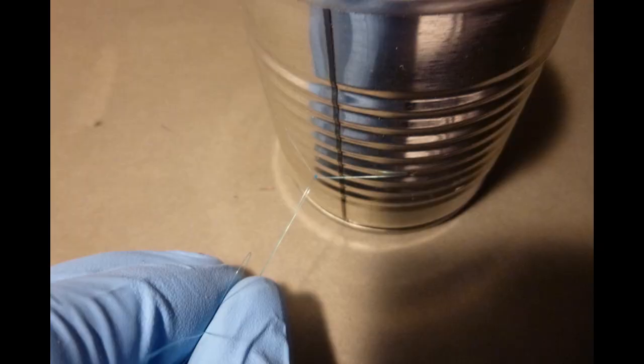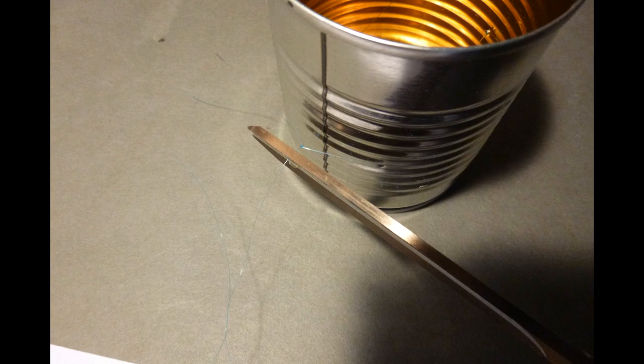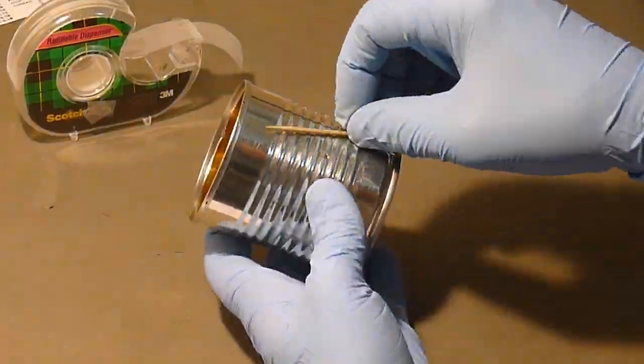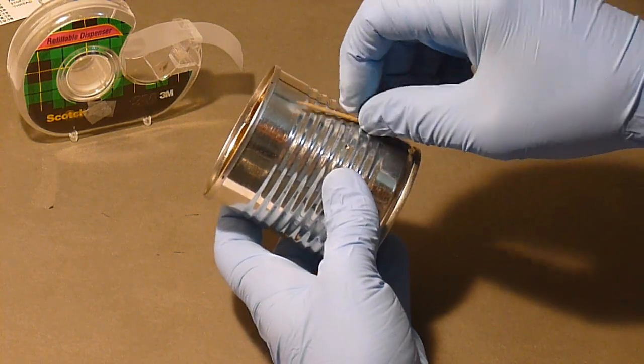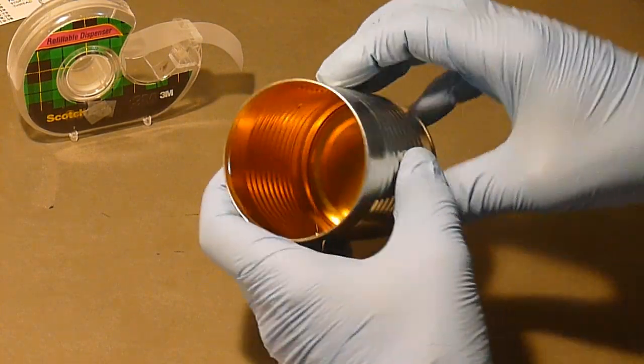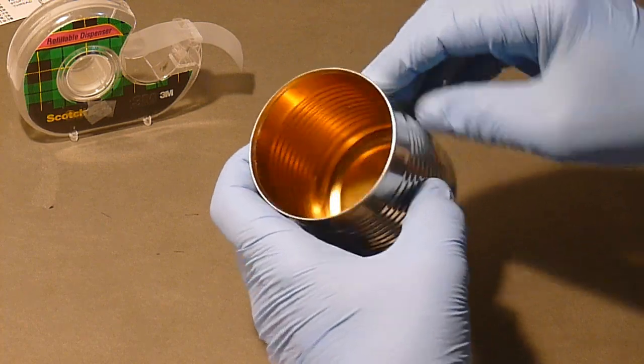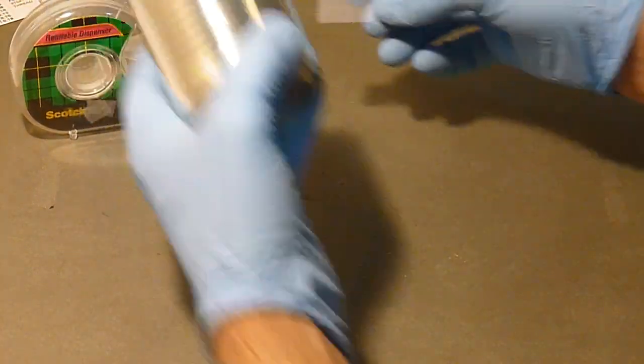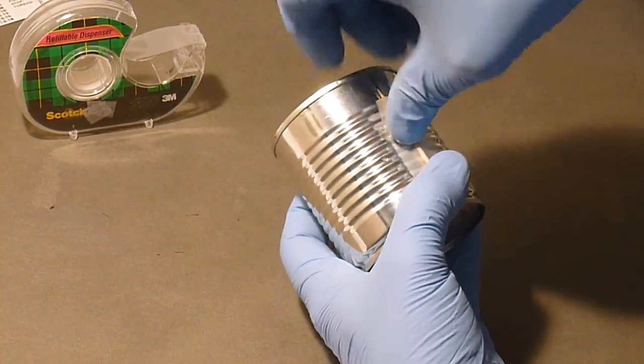Tie the two ends together tightly and cut off the loose ends. Slip a toothpick underneath where you tied the line and turn it until the tension on the line is fairly tight. Tape it in position to the outside of the can.